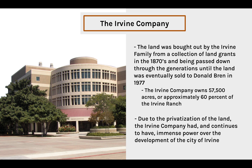A key factor enabling this was the Irvine Company operating as a private entity. The land was bought by the Irvine Company in the 1870s from a collection of land grants, passed down through generations until sold to Donald Bren in 1977. By the 1990s, Donald Bren had gained full ownership of the company. The Irvine Company now owns over 57,500 acres — approximately 60% of Irvine Ranch. Without this privatization, Irvine would not have been able to complete its master plan or fulfill the suburban ideal it holds today.